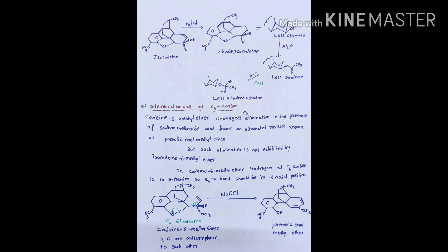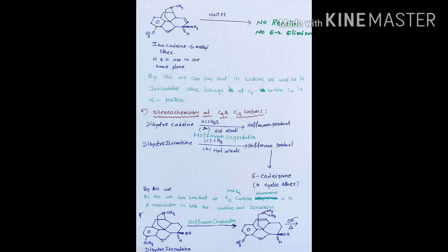Now we go for the stereochemistry of morphine at C5 carbon. Codine-6-methyl ether undergoes elimination in the presence of sodium ethoxide and forms an eliminated product known as the phenolic enol methyl ether. But isocodine-6-methyl ether does not undergo any elimination reaction with the base. We know that in E2 elimination, the bonds that are broken should be in anti-periplanar structure to each other. This confirms that in codine, the hydrogen and the ether bond should be anti-periplanar to each other.